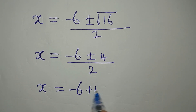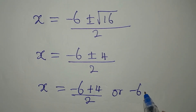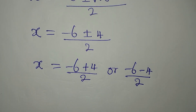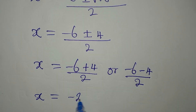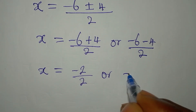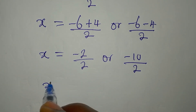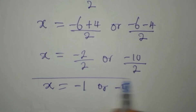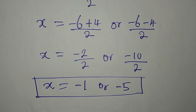This gives two values: x equals (negative 6 plus 4) over 2, which is negative 2 over 2 giving x equals negative 1; or x equals (negative 6 minus 4) over 2, which is negative 10 over 2 giving x equals negative 5. So we have two real solutions: x equals negative 1 or negative 5.